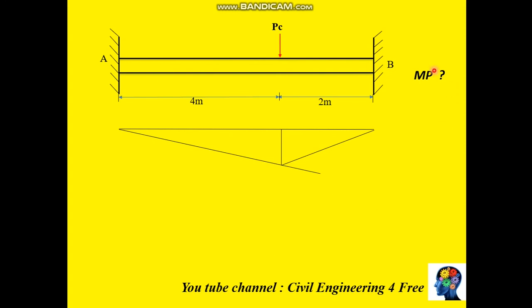Let's see it with this practical example. We have a fixed beam subjected to a concentrated load, and we are required to calculate the plastic moment. The first step is to assume and draw the collapsible mechanism. The maximum deflection occurs directly below the concentrated load. The plastic hinges will be formed at the left support, at the right support, and finally below the concentrated load.